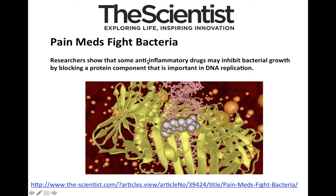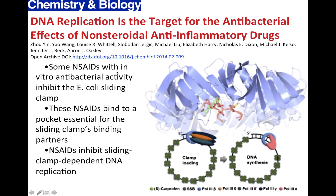Recently, researchers have shown that some anti-inflammatory drugs inhibit bacterial growth by blocking a protein component important in DNA replication. These anti-inflammatories are NSAIDs and they inhibit the reactivity of the sliding clamp. The sliding clamp is a subunit of DNA polymerase 3 that clamps it to the DNA molecule, keeping it from falling off. A molecule that stays on its template continuously synthesizing for long periods of time is called a highly processive enzyme. DNA polymerase is one of those enzymes.